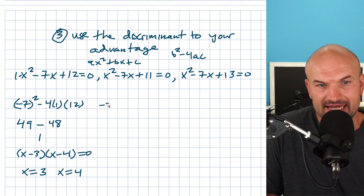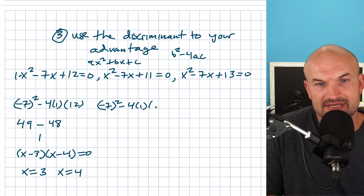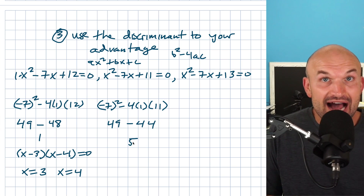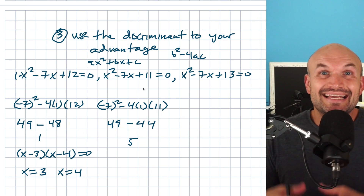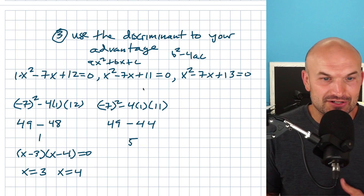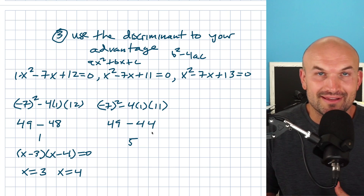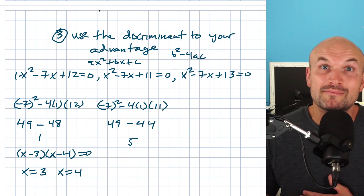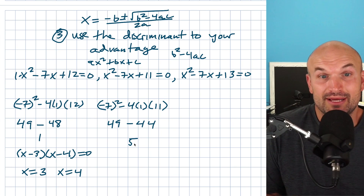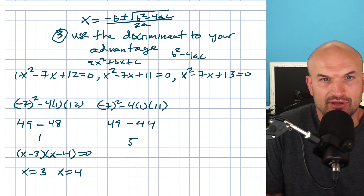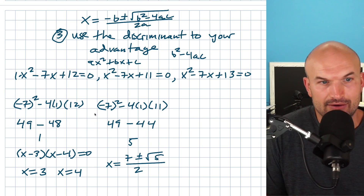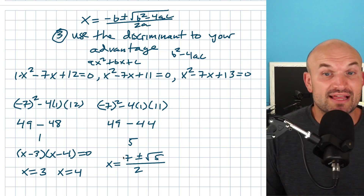In the next example, negative 7 squared minus 4 times 1 times 11 gives 49 minus 44, which equals 5. Since 5 is not a perfect square, you'll have two real irrational roots — this is probably not easy to factor. So use the discriminant and plug it into the rest of the quadratic formula: x equals opposite of B plus or minus the square root of the discriminant, all over 2A. Since B is negative 7 and the discriminant is 5, the solution is x equals 7 plus or minus the square root of 5, all over 2.